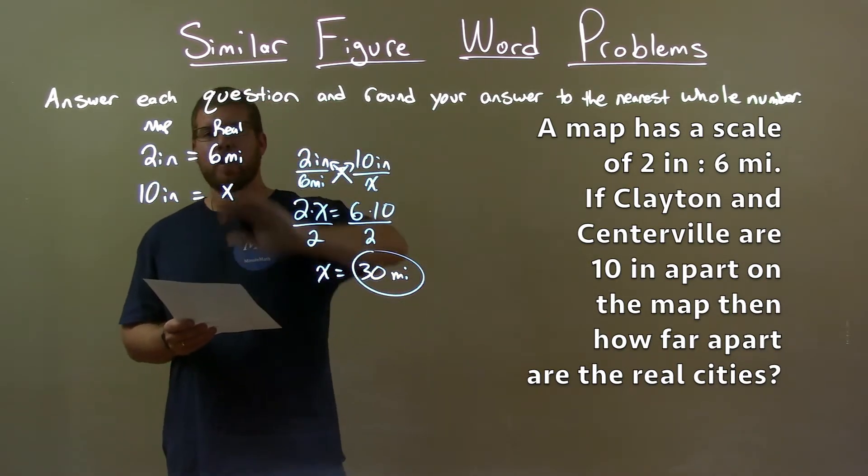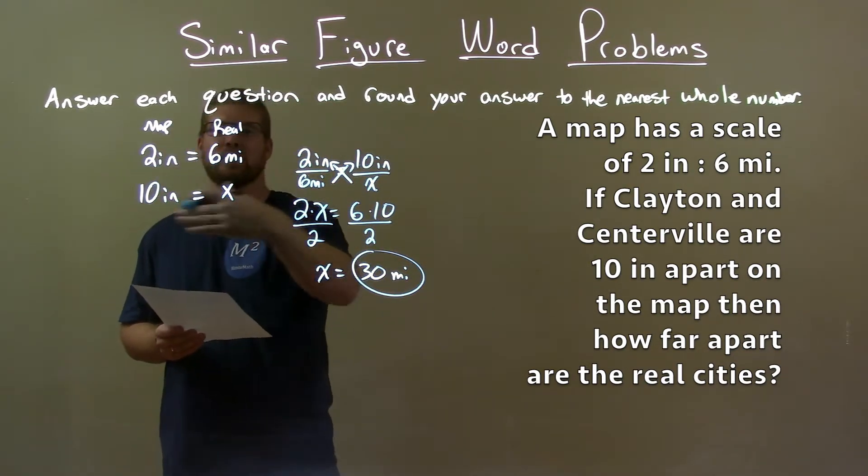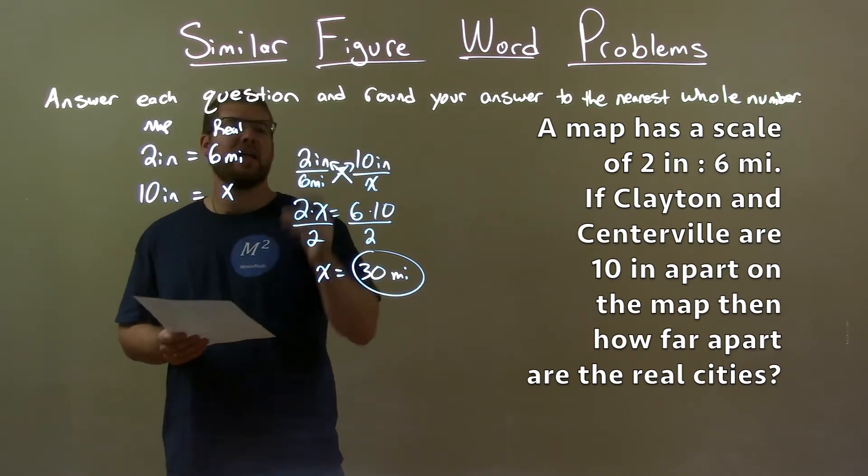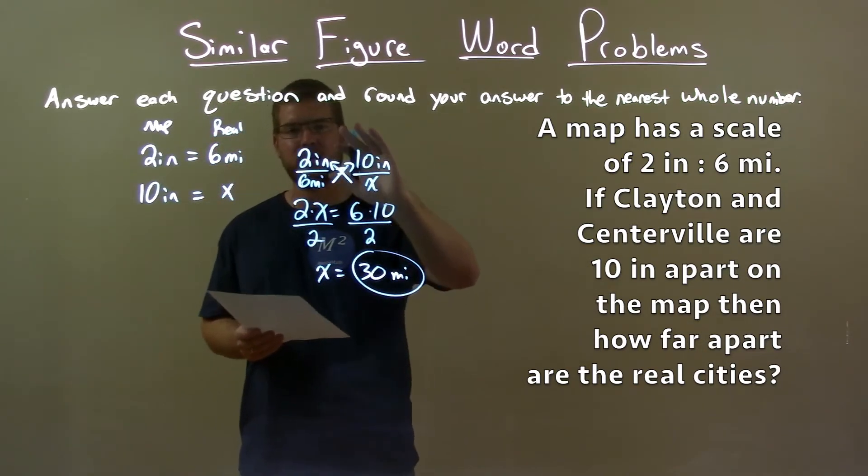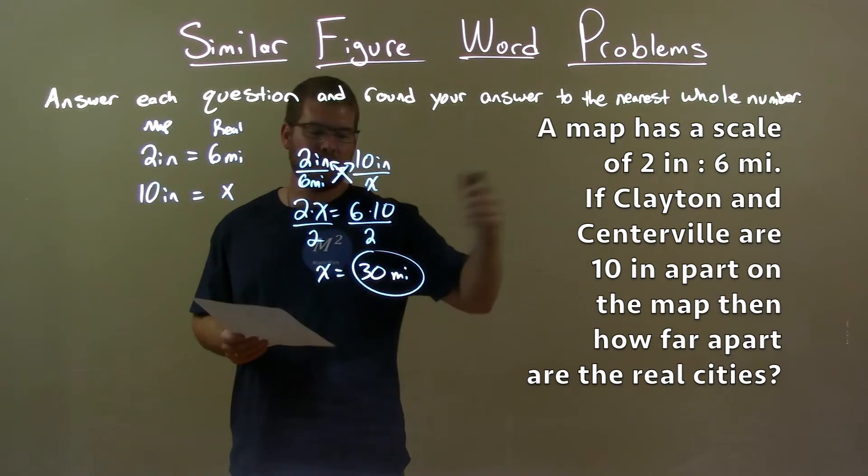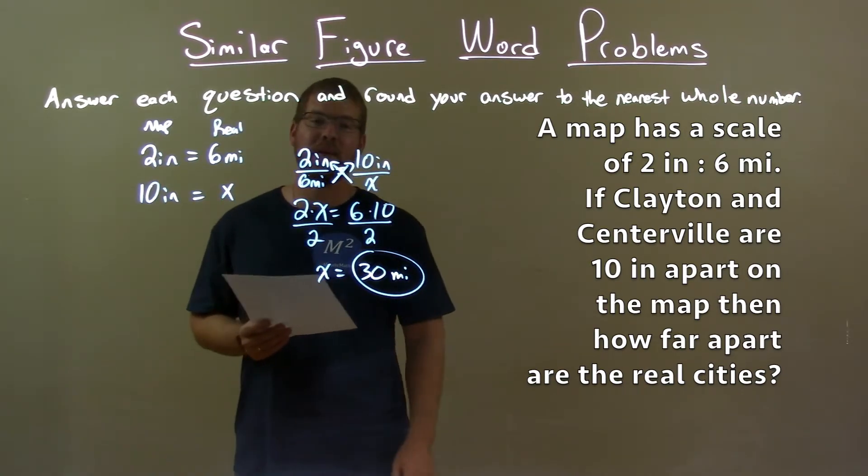Well, with the information from the word problem, we created this little proportion scale thing. Then we wrote that as an equation here, as a proportion and solved for the missing variable. And we got our final answer of 30 miles.